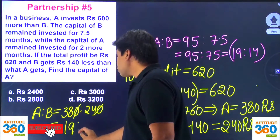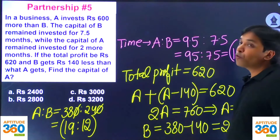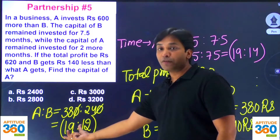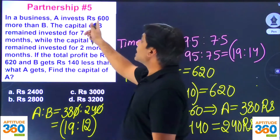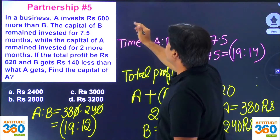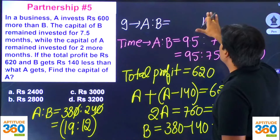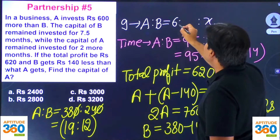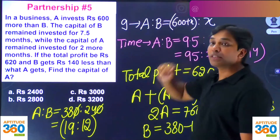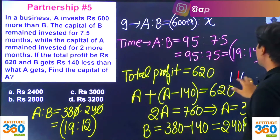Now we know the profits of A and B, so the ratio of profit is 380 to 240, which is 9 to 12. We know the ratio of time periods and the ratio of profits; we need to find the ratio of investments. A invested 600 rupees more than B. If B invested X, then A invested 600 plus X. So we know the ratio of investments, time periods, and profits — we need to find the value of X.